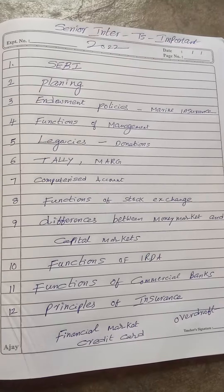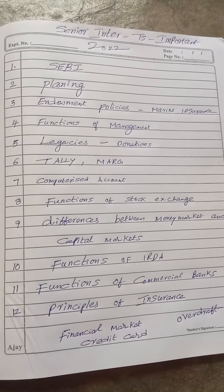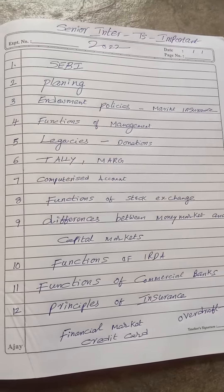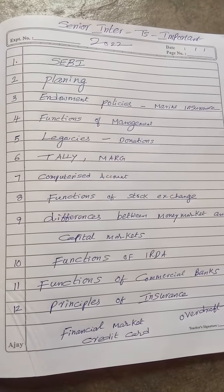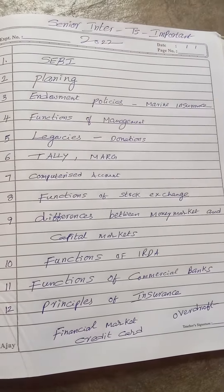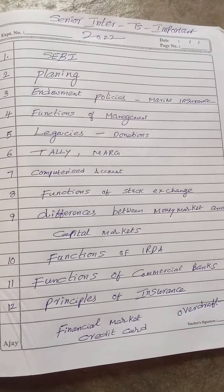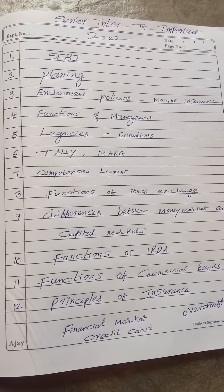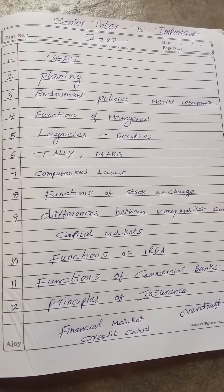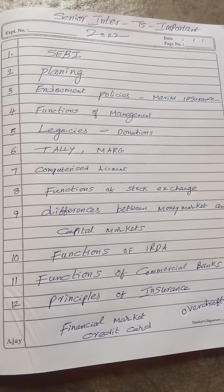My dear senior intermediate students, hope you are doing good preparation for examinations. Here you prepare these questions — these are very good preparation questions. You have to learn about SEBI, Securities Exchange Board of India. Then planning — planning is thinking before what you do. Endowment policies and marine insurance — these are the kinds of insurance policies. Then functions of management.